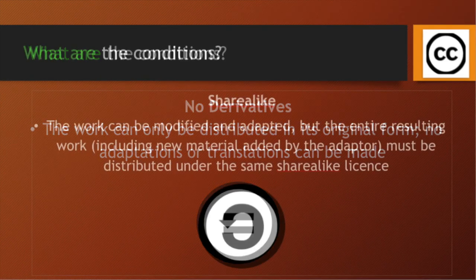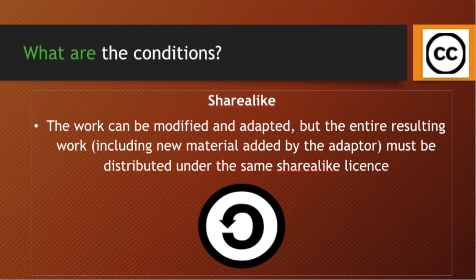The third condition may be share alike. In this, the work can be modified and adapted, but the entire resulting work — including new material added by the adapter — must be distributed under the same share alike license. For example, if I released an image on the internet under a share alike license, you can change it, make modifications, use it any way you want, but the final video, presentation, or image has to be released under the same license.